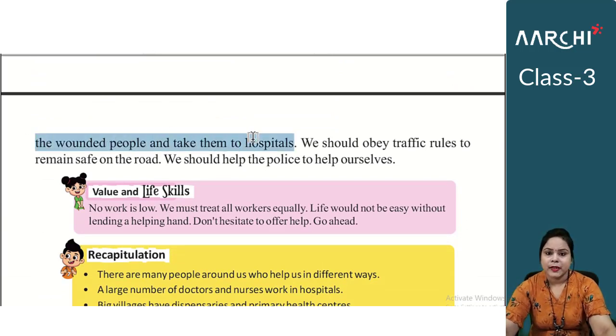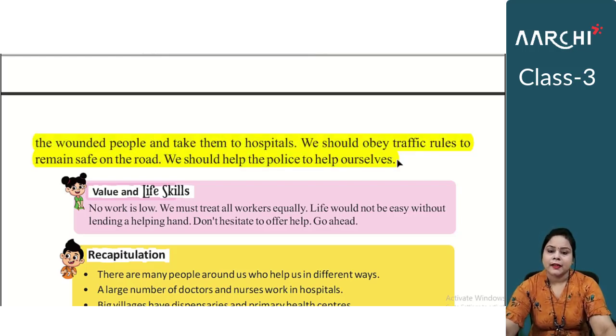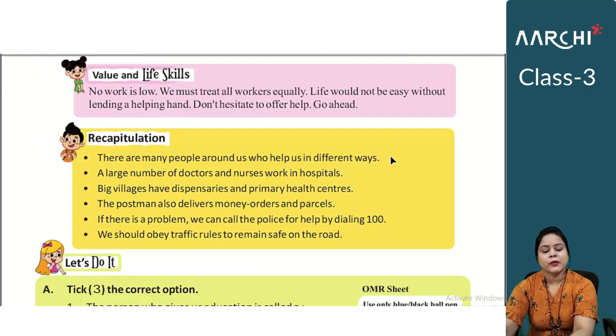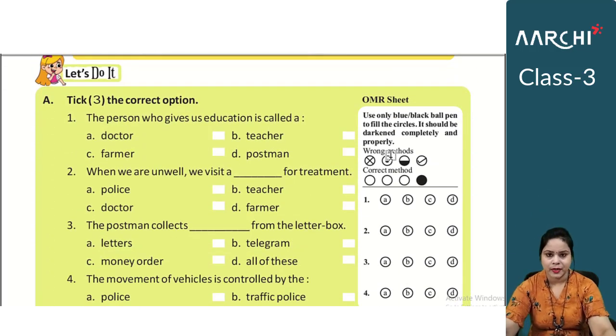So we should always follow the road safety rules and we should always help the police. We should also play our own role responsibly on the road. So students, this is the chapter on community helpers. I hope you have understood the chapter.